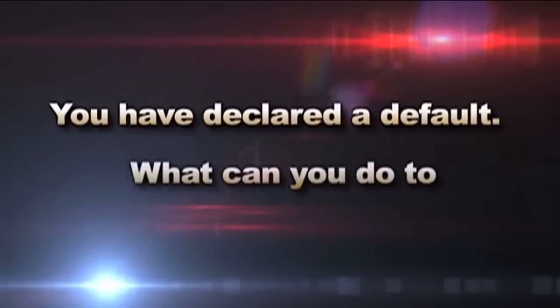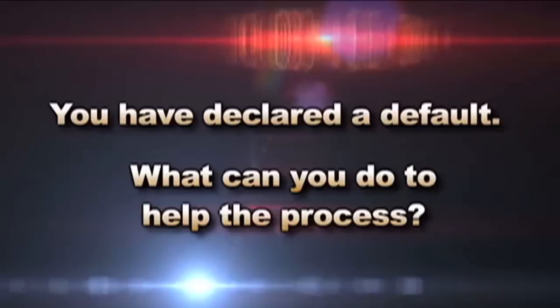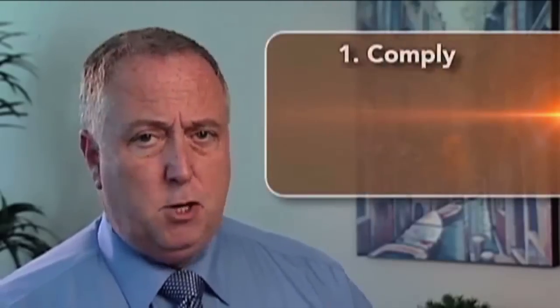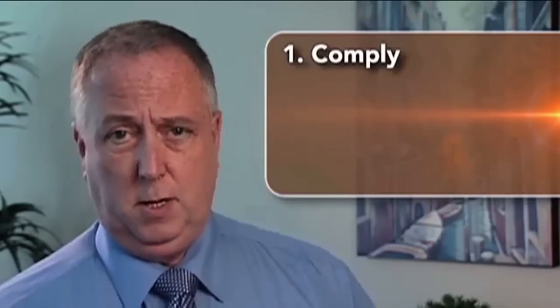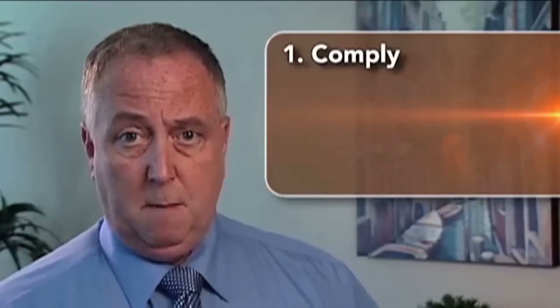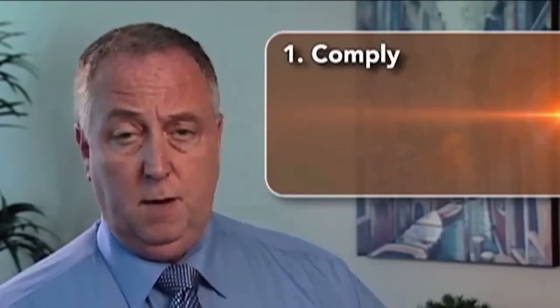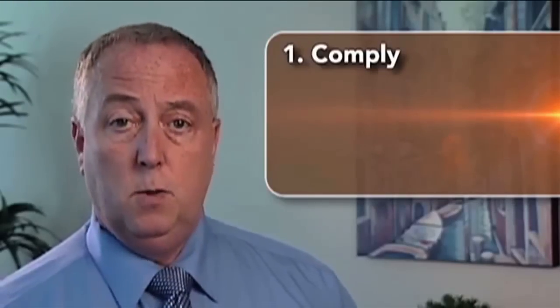Once the contractor has been declared in default and the surety has responded under the bond, there are four things you can do to expedite the default resolution process. First, make sure you comply with the contract terms and the bond terms — this is critically important because without that, you may not have any protection under the bond. Make sure you've paid the contractor in accordance with the contract and given both the contractor and the bonding company proper notice of any issues as required.